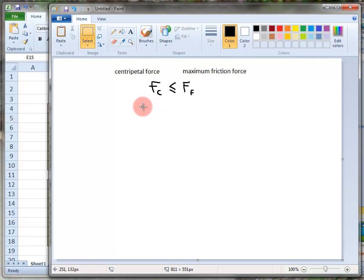The centripetal force is given by the formula M V squared over R. R is the radius of the bend, V is the velocity of the car, and M is the mass of the car. At the limit that is equal to mu N, where mu is the coefficient of friction and N is the normal force acting down on the road surface.